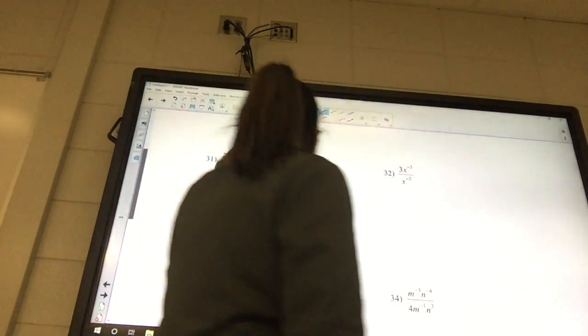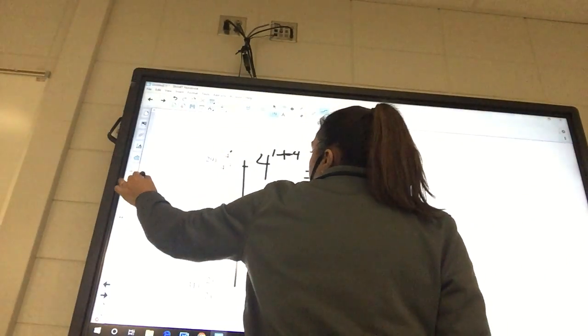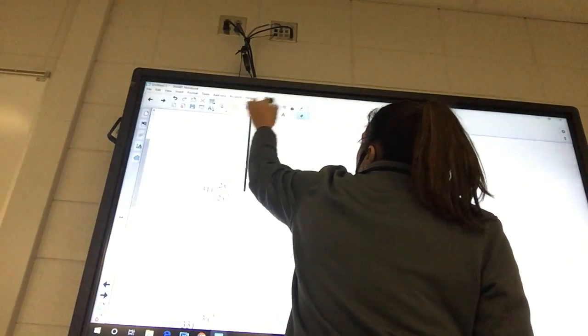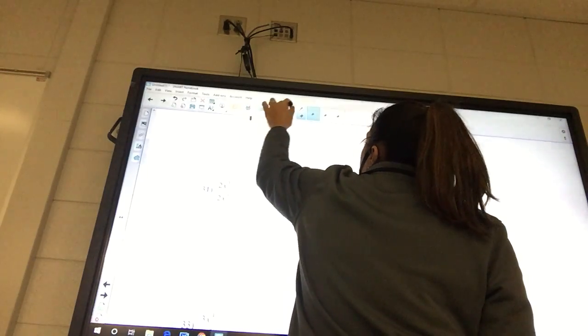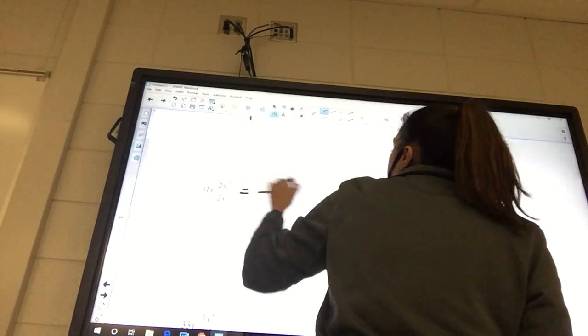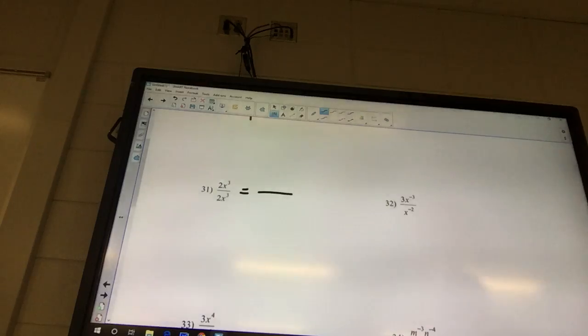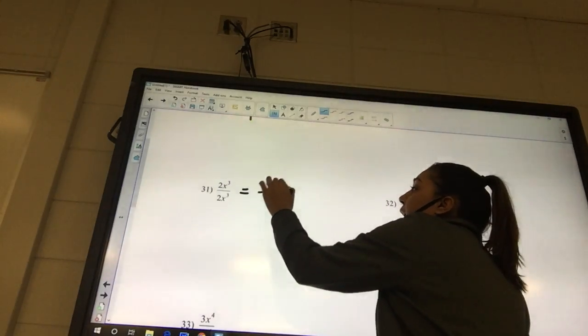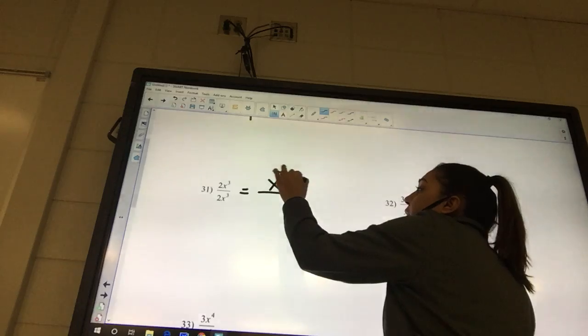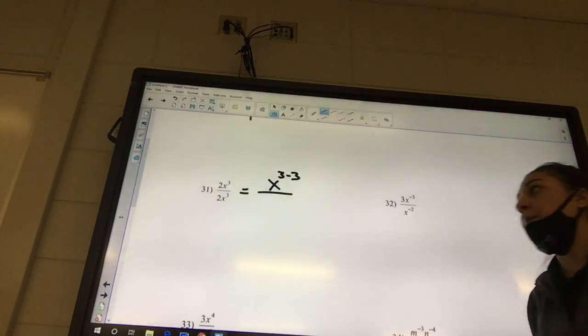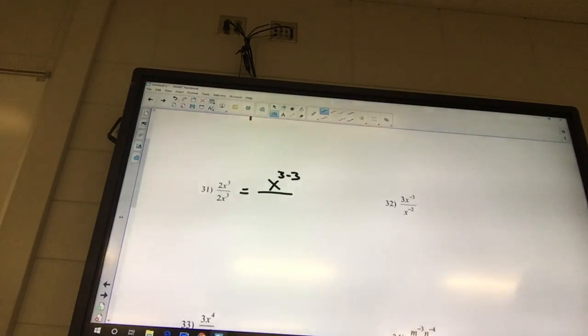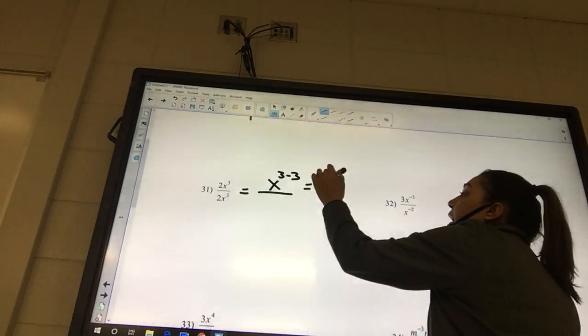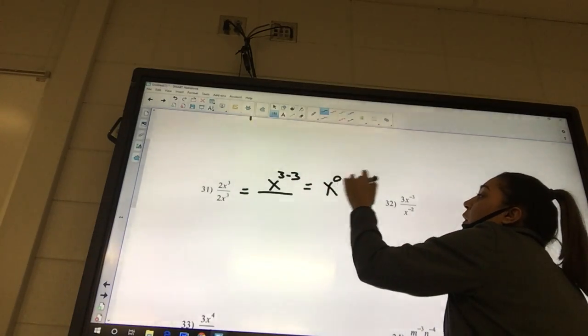Okay, 31. We deal with the big numbers first. What is 2 over 2? 2 divided by 2. It's a 1. And so you can put a 1. And then we subtract the exponents, and we always subtract them on the top part. So it's going to be x to the 3 minus 3, top minus bottom. What is 3 minus 3? Zero. So it's going to be x to the 0, which is what? 1.